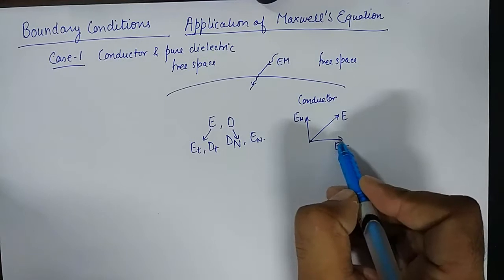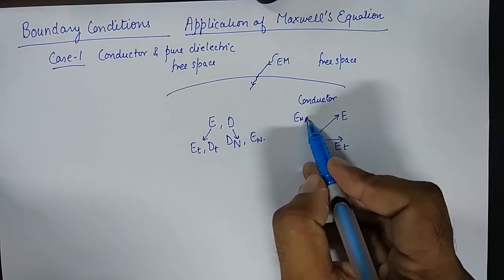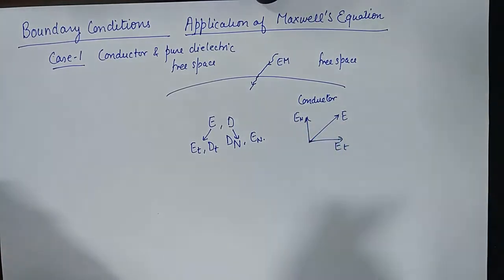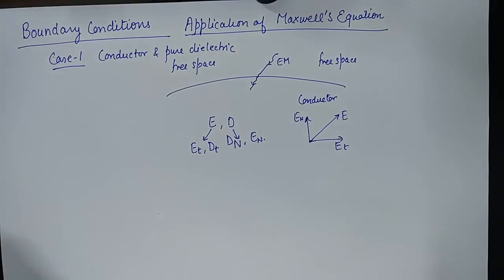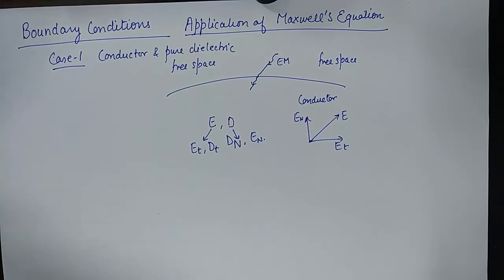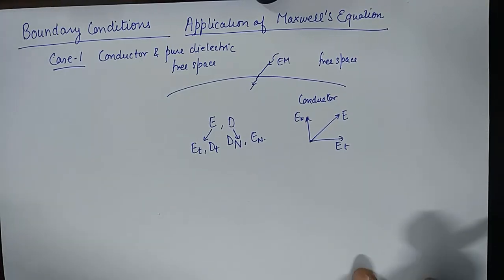So if we are able to find the tangential and the normal components, we can graphically plot the resultant vector. We'll study the behavior of the tangential and normal components on the boundary. To study those behaviors, it is very important to have knowledge of Maxwell's equations.